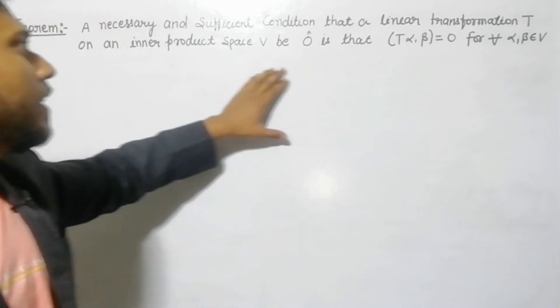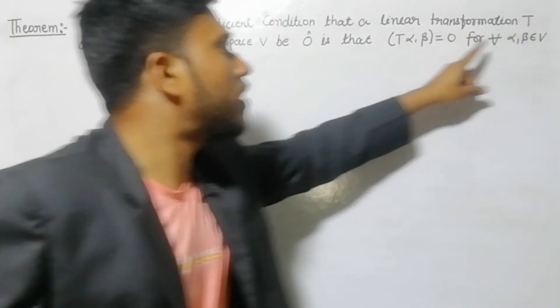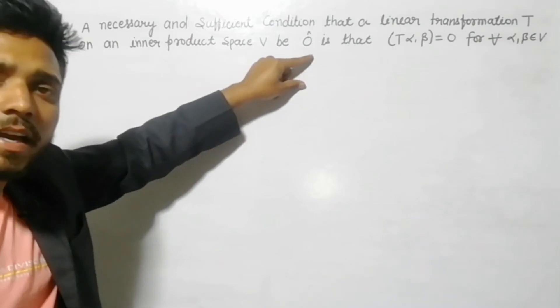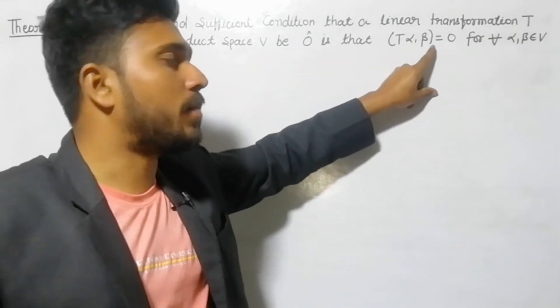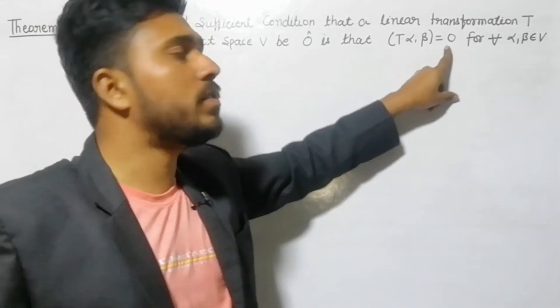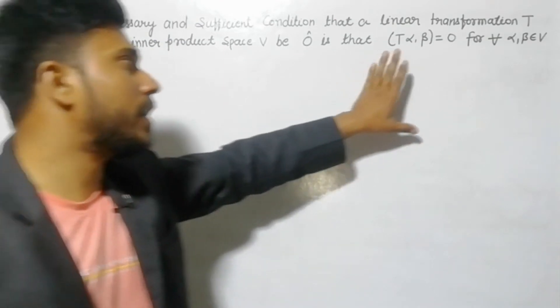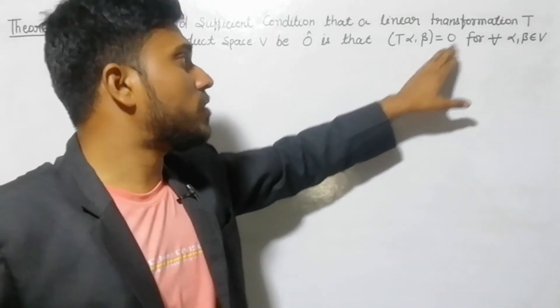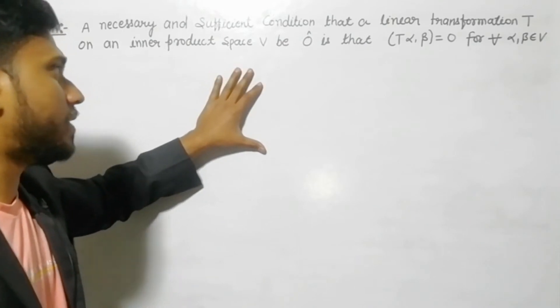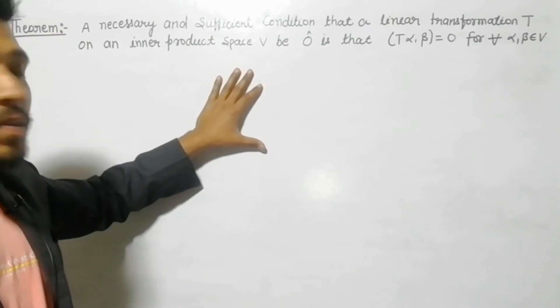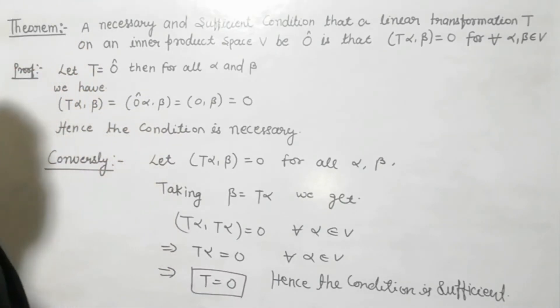In the first condition, I will assume that if this transformation is zero, then your inner product (T(α), β) that you see should be zero - we have to show that. And the second thing is conversely, we have to prove that if this thing is zero, then the transformation is also zero.